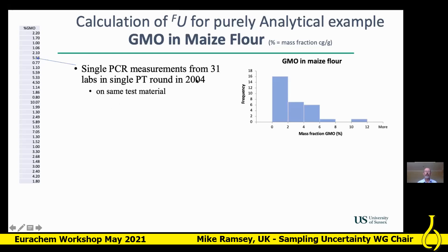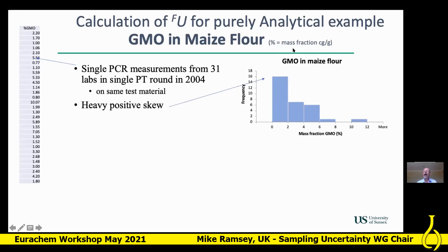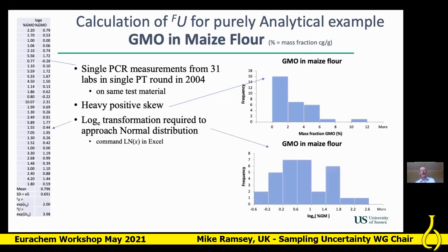This PT round was conducted in 2004 with 31 labs taking PCR measurements on the same test material. There's quite a scatter, and the histogram shows a heavy positive skew — this is not approximating a normal distribution. The units are percent, which more rigorously would be mass fraction kilograms per gram, but I'll use percent for short.